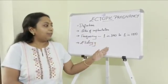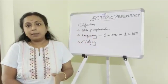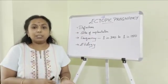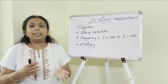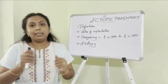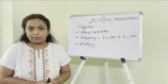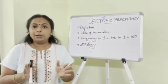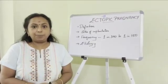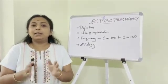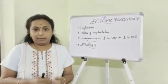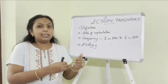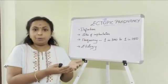The ovum which gets fertilized in the ampullary part of the uterine tube traverses down the tube and then gets implanted in the endometrium of the uterine cavity. This is the case of a normal pregnancy.